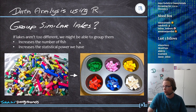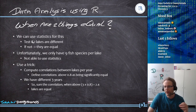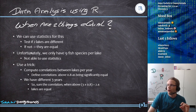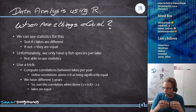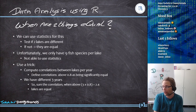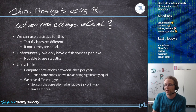When are two things considered equal? We can use statistics to test if two lakes are different — if they are not different, they should be equal. The issue is we only have nine fish species per lake, and some species are very rare, with counts jumping from five fish in one year to 200 the next. This makes standard statistics very difficult.